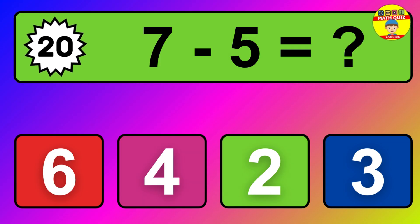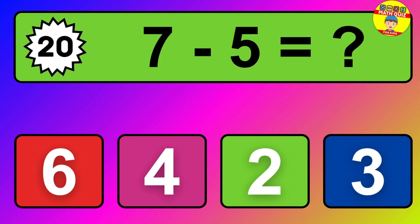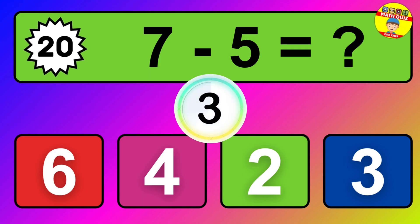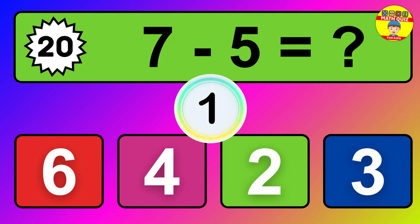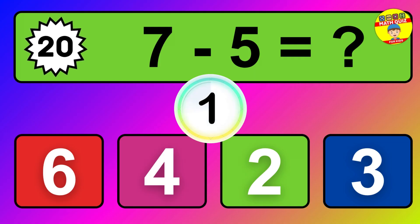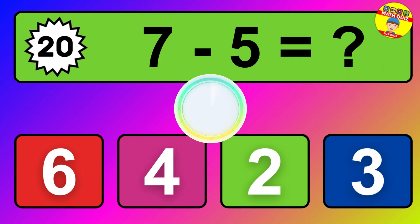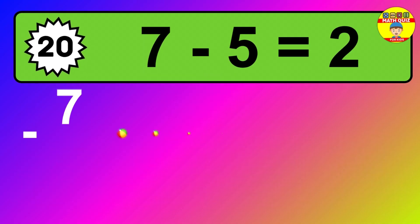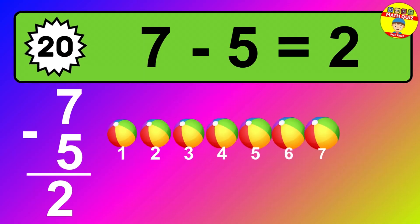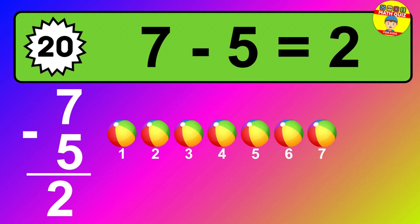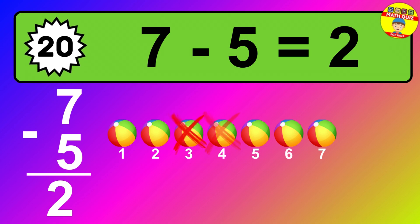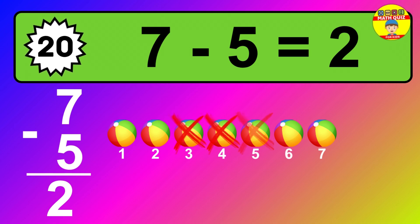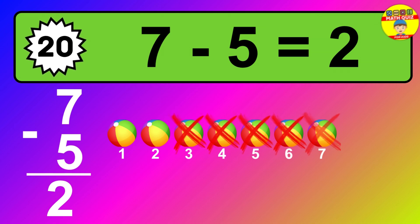Question twenty: seven minus five equals what? So the answer is seven minus five is two. Let's count it: one, two.